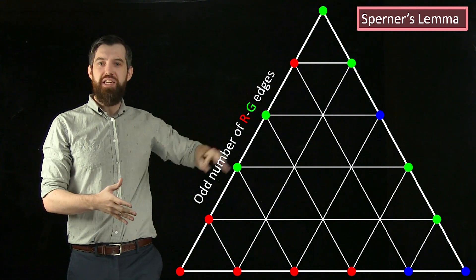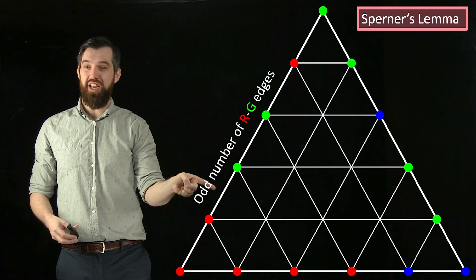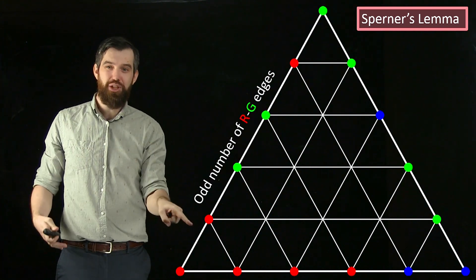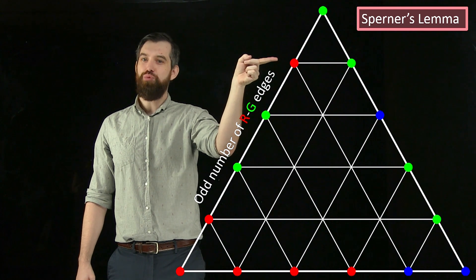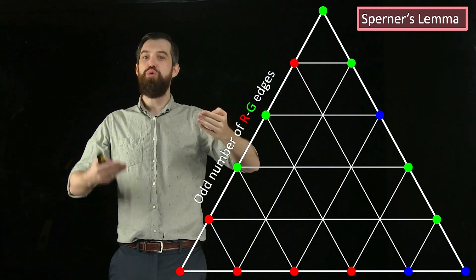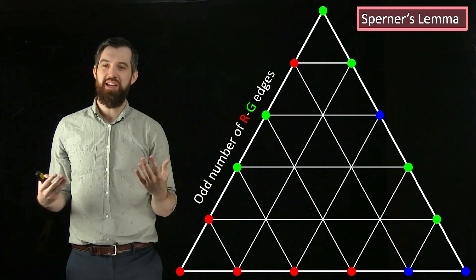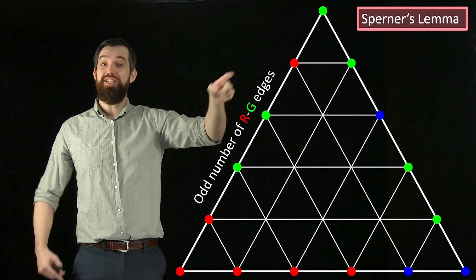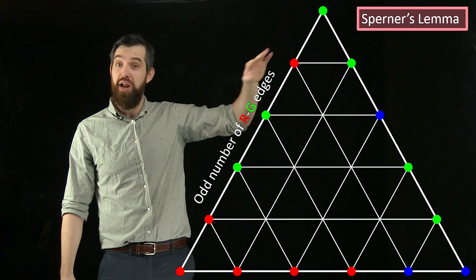If I make changes to the colors: if I change an interior red to green, it would just shift where the red-green edge occurs — that doesn't change the number of them. But if I change a point that had two red-green edges flanking it to green, both those edges disappear — removing two. Or if I change a point to blue, it would add two. So our argument: there has to be at least one, and any change either shifts (adds zero) or adds/subtracts two. Starting from an odd number, you always end up with an odd number. So there's always an odd number of red-green edges.